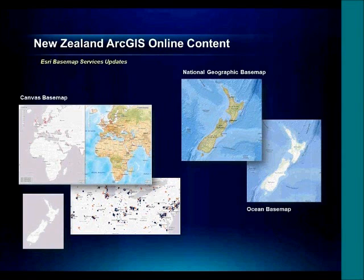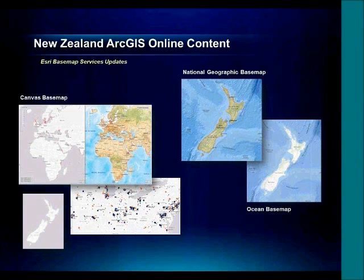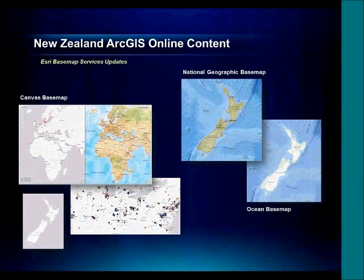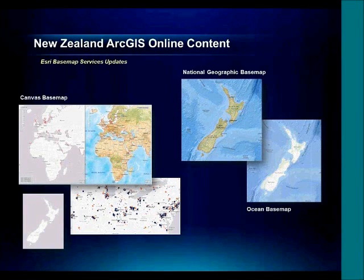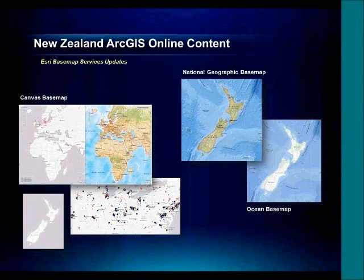Next on the list for New Zealand updates are the Canvas Basemaps, the National Geographic Basemap, and the Ocean Basemap. The Canvas Basemaps are quite a bare-bone basemap, which really allow you to overlay your thematic content and have it take center stage over the basemap. In contrast, the National Geographic Basemap is quite a detailed reference basemap that showcases some of the beautiful cartography coming out of National Geographic. The Ocean Basemap really highlights oceanography by showing the world's waterways. All of these basemap services will be getting updates for New Zealand within the next year.